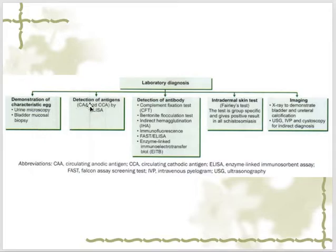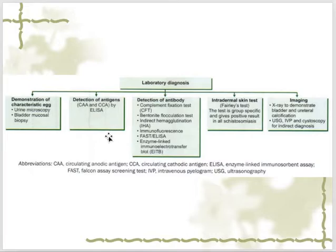Serological tests are also done. They are sensitive but not very specific due to inter-parasite antibodies which can persist even after the infection has resolved. The specificity is too low, so these tests are mainly used in endemic areas. Imaging such as ultrasound is used to look for obstructive uropathy, bladder wall thickening, granulomas, calcifications, hydroureter, and hydronephrosis, as discussed in the previous lecture.